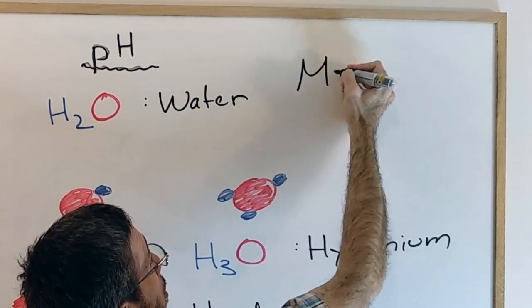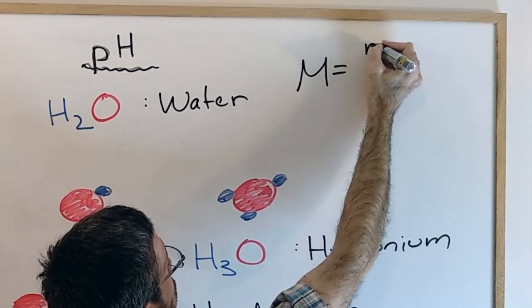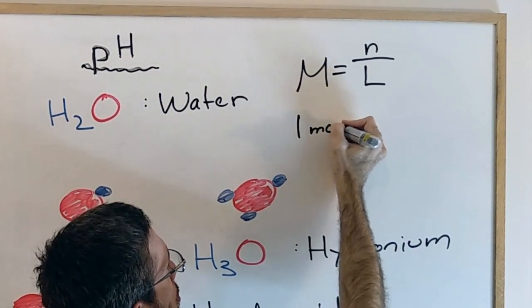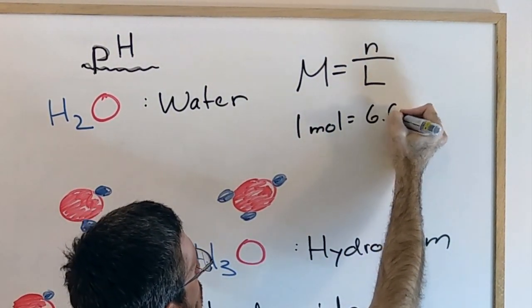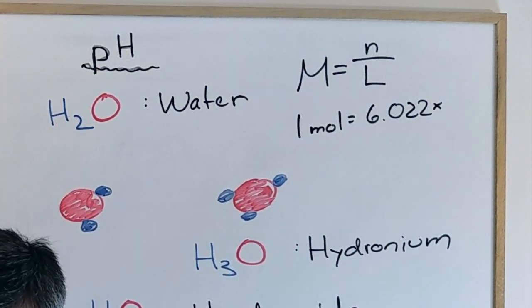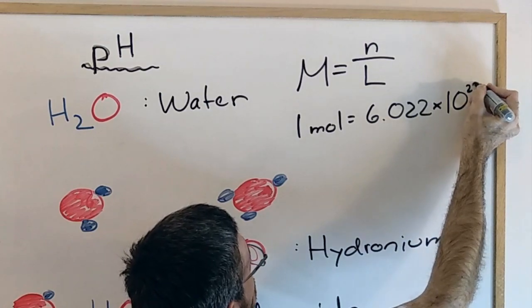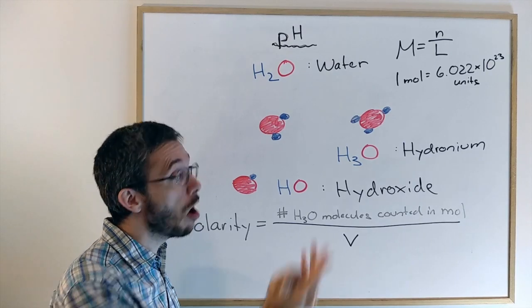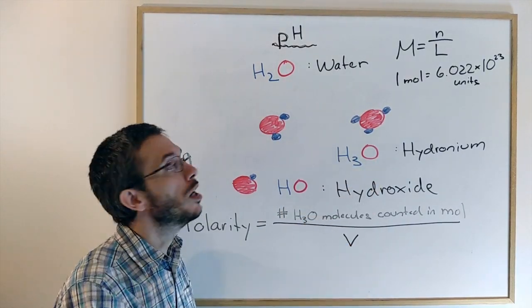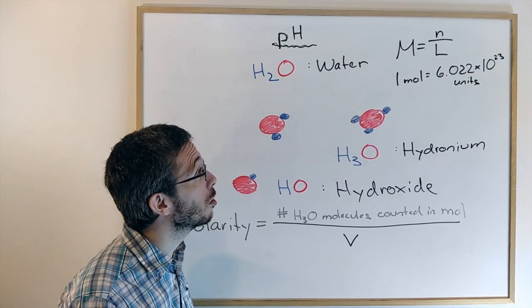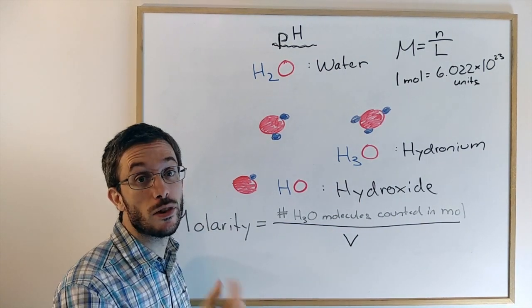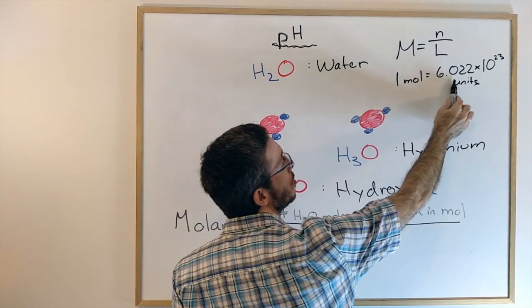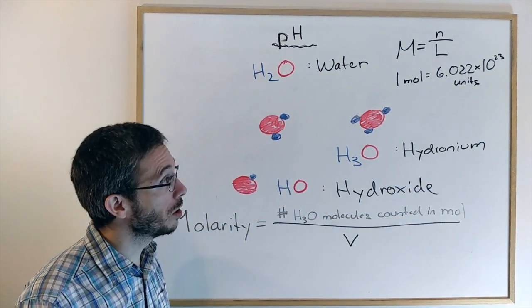So molarity M is number of moles of a substance per liter. And 1 mol is equal to 6.022 times 10 to the 23 units. Now, we use mol because there is a lot of hydronium in a liter of water. If you would have to write numbers with 10 to the 23, that's a number with 23 zeros. Because that would be an extremely big number, we usually use this unit mol.